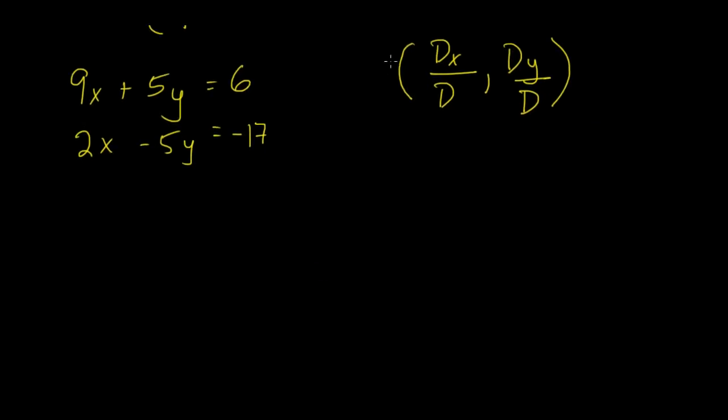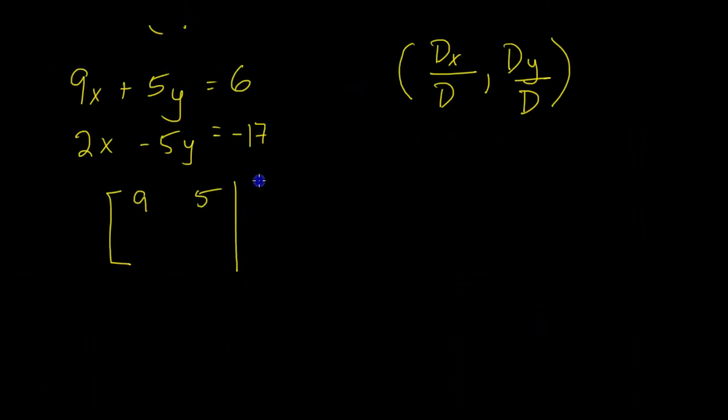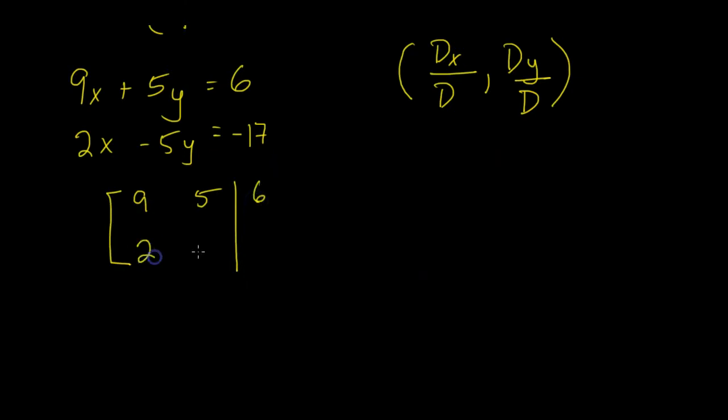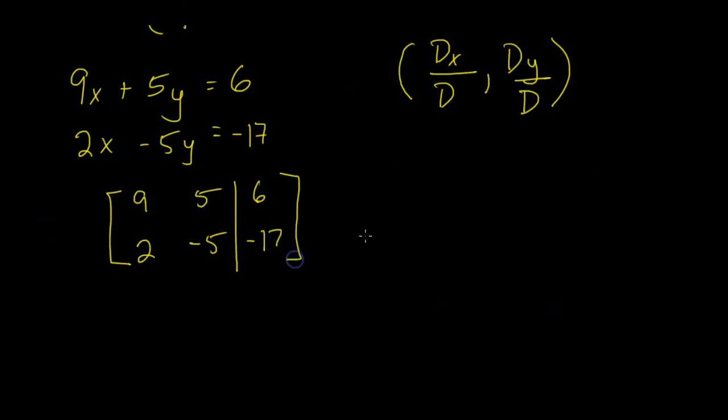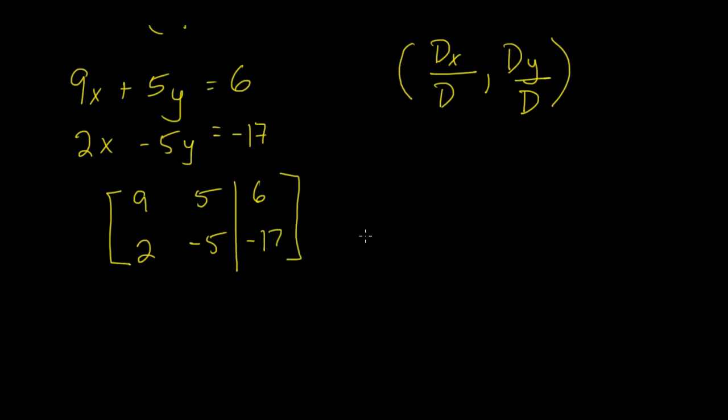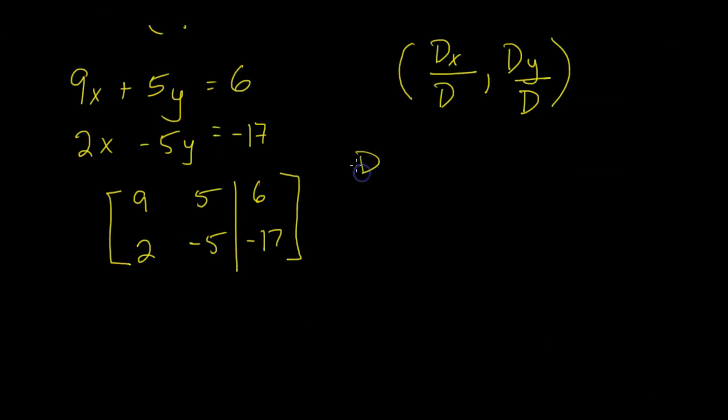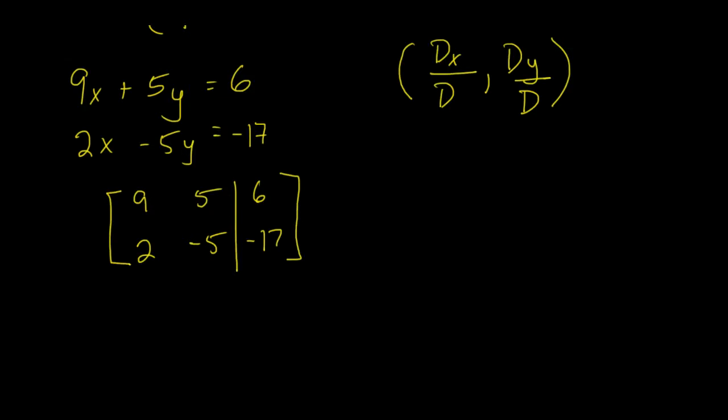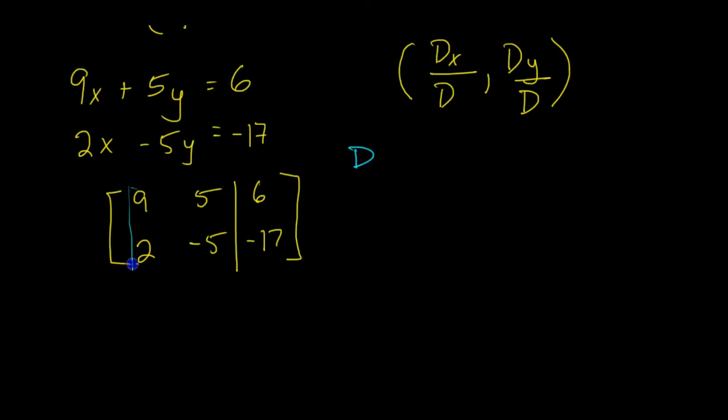Our 3 by 2 matrix here, using just the coefficients, looks like 9, 5, and that will be the equal sign of 6. Then we'll have 2, negative 5, and then the negative 17 to the right of the equal sign. And what we want to do is we want to find the base determinant, which will give us this here.